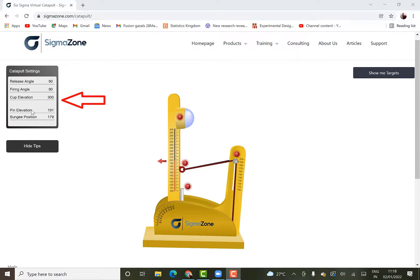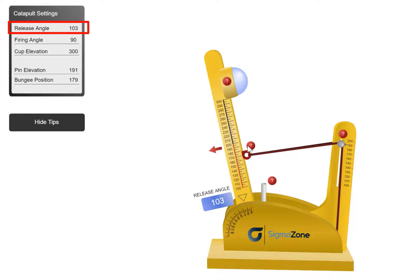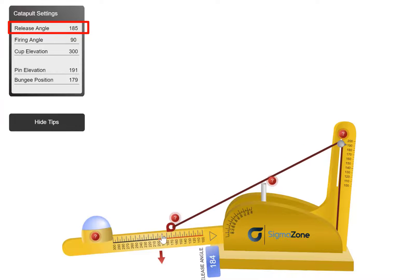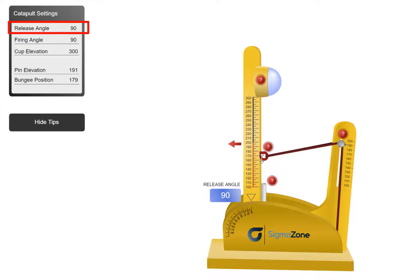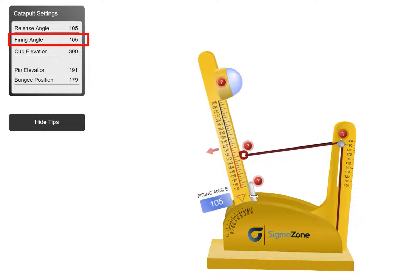pin elevation and buggy position. The release angle is this one and you can change the release angle. Like this and I think it can go up to 185 and the minimum could be that depends on the firing angle, but I think it can be 90.